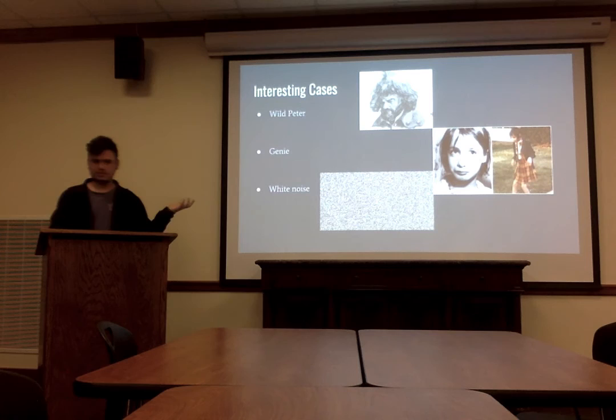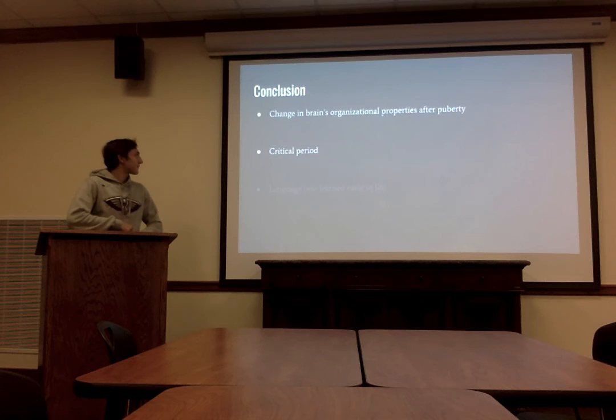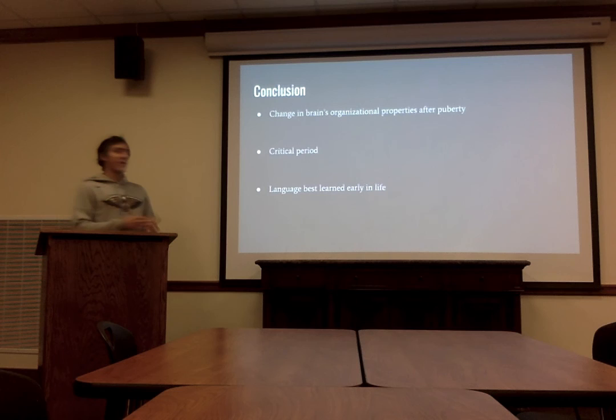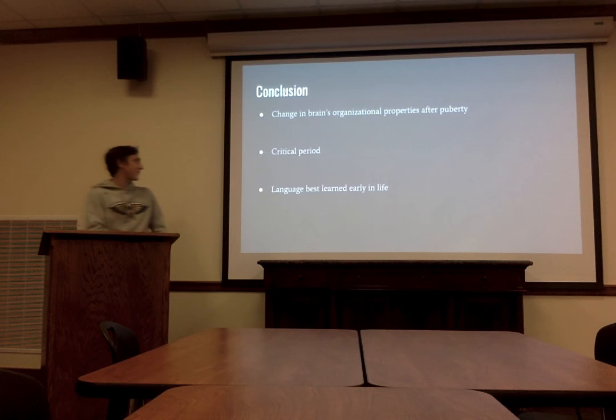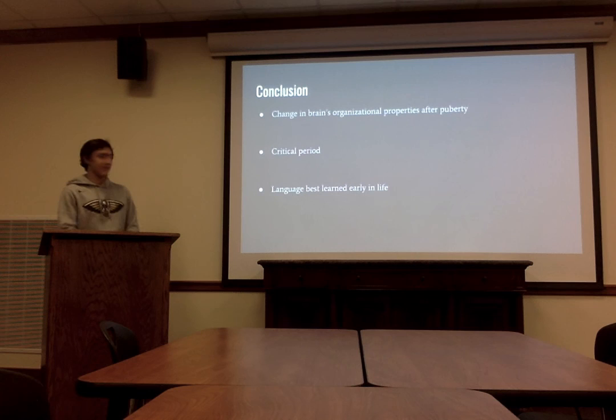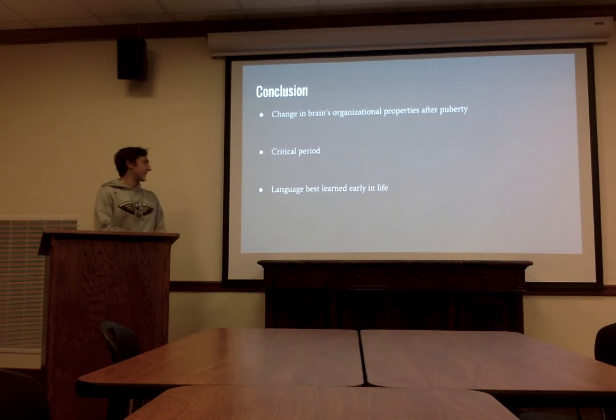In conclusion, we found that there is a change in the brain's organizational properties after puberty. The brain is still expanding during puberty and can shift to accommodate a second language, but once puberty ends, that can no longer happen — which is why second language acquisition is so much worse after puberty. There is in fact a critical period; it happens before puberty, it is the peak of learning, and language is best learned early in life before puberty ends.